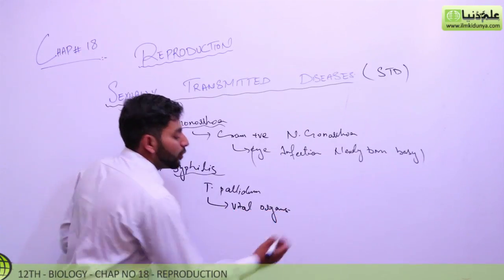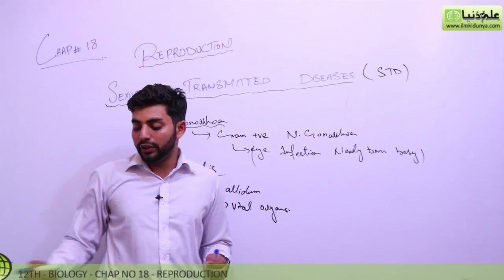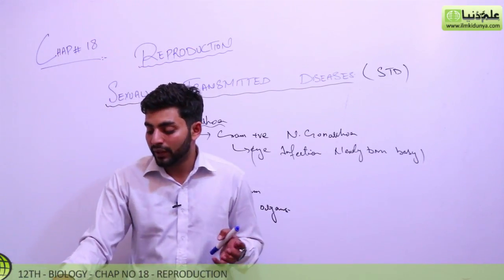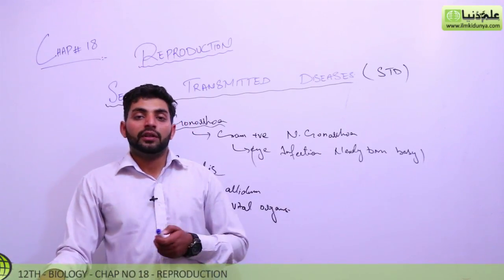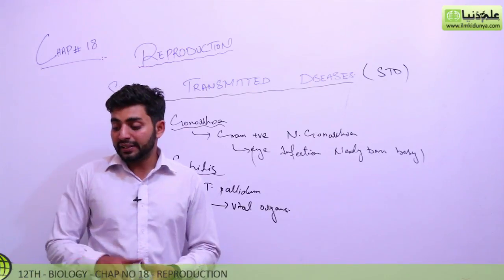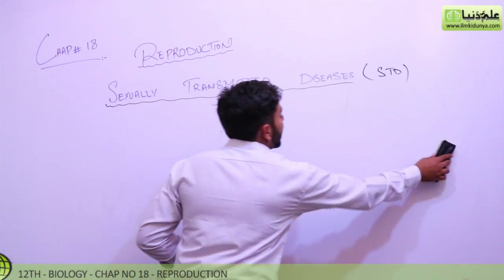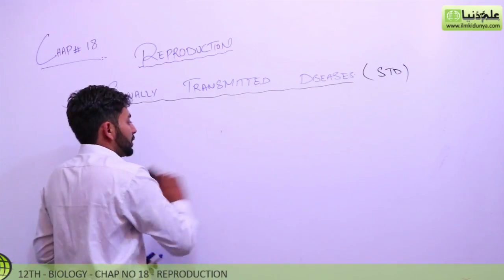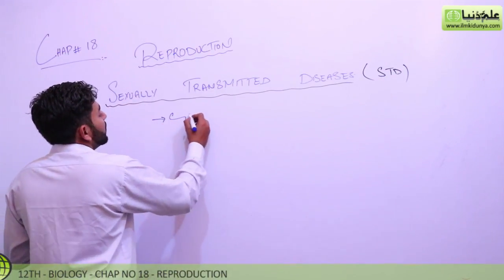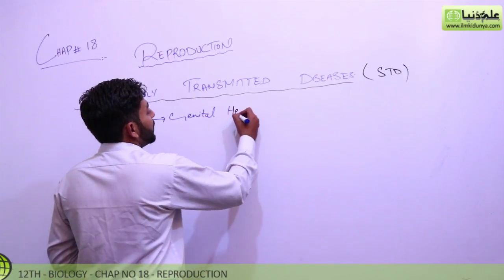So vital organs when attacked, then there will be a problem for the newly born. Sexual contact is a major source of its dissemination. This is the reason the most important is sexual intercourse, syphilis of external genital problems. This is genital herpes.